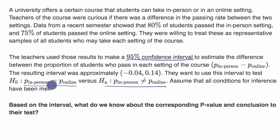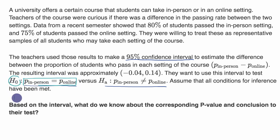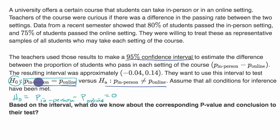What's interesting here is we're going to use a confidence interval to think about a hypothesis test. In a hypothesis test, we assume that our null hypothesis is true. We could also write it as: the difference between the in-person and the online true proportions is equal to zero. These are equivalent statements.